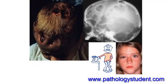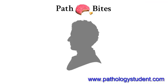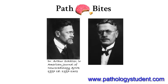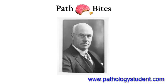Hand-Schüller-Christian disease is named for the three people that contributed the most to the characterization of the disease: Alfred Hand, who first described the disease and established the classic triad of signs; Arthur Schüller, who described the map-like or geographic pattern of the skull in this disease; and Henry Asbury Christian, who described the full clinical picture of the disease.